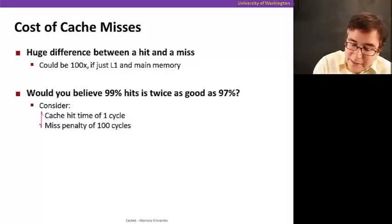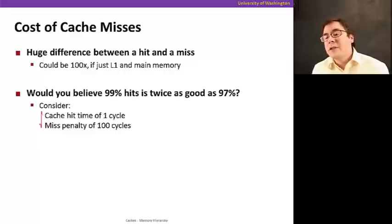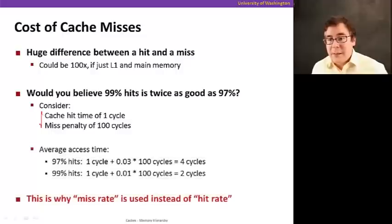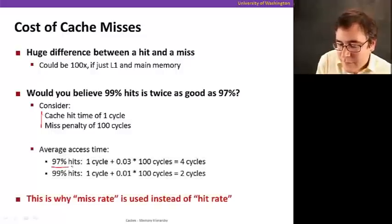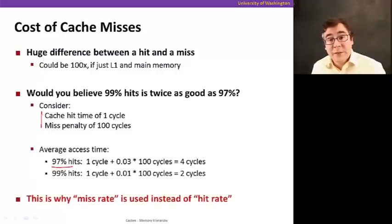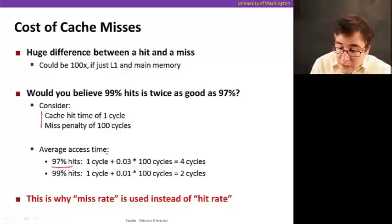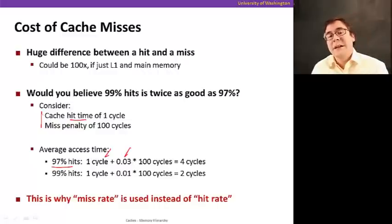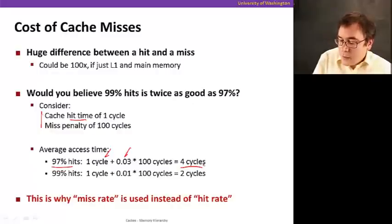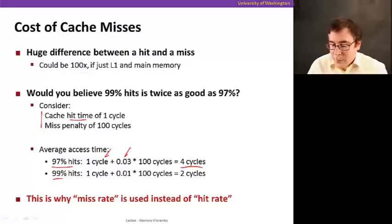And in this example here, let me show you. Say that a cache hit costs one cycle and the penalty of taking a cache miss is 100 cycles. It means that the average access time for a 97% hit rate is one cycle, which you always take the hit time, plus 3% of the time you're going to pay 100 cycles, which is your penalty. That leads to a four cycle average cost.